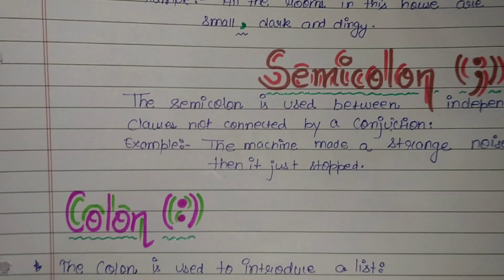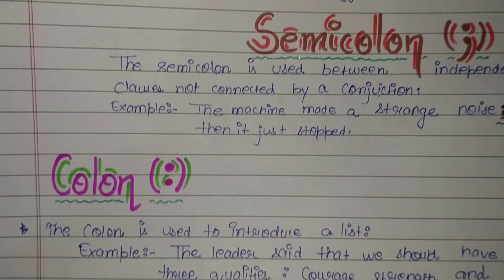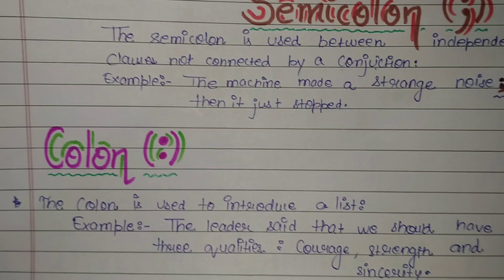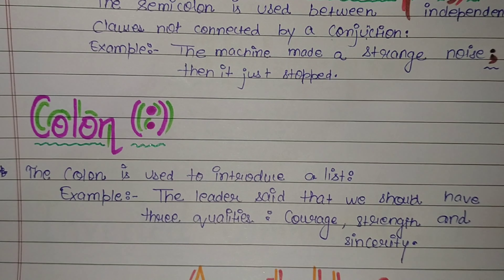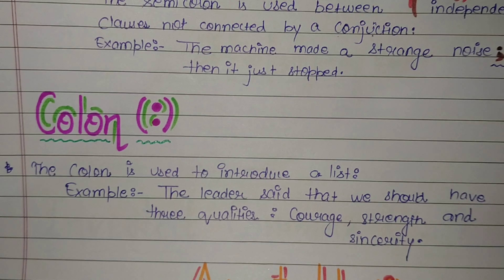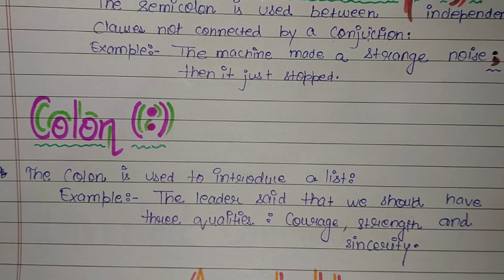The sixth one is the colon. The colon is used to introduce a list. Example: 'The leader said that we should have three qualities:'